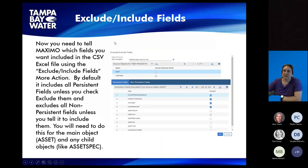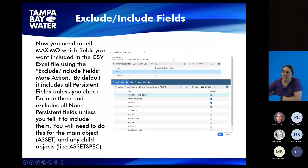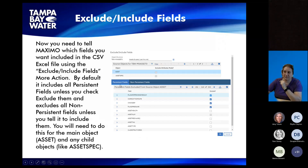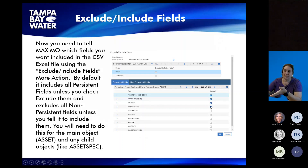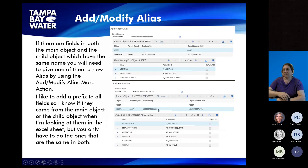Now you need to tell Maximo which fields from the assets app you want included in your CSV file when you download it and which ones you're going to send back when you upload it. From that screen there is a Select Actions menu where you can go to Exclude/Include Fields. By default, Maximo thinks you want every field that's a persistent field and none that's a non-persistent field. So you have to go through all these fields — in assets I have 250 — and check boxes to exclude persistent fields you don't want, or include non-persistent fields you do want.